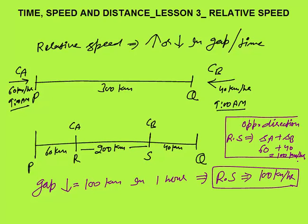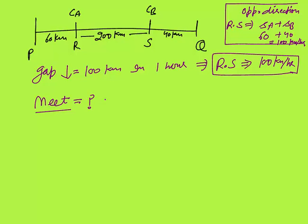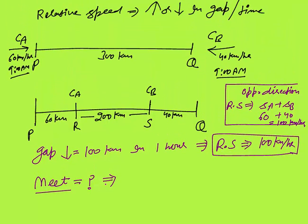My second question with respect to this example is: when will these two cars meet? You can see that the gap is 300 km. We need to reduce this gap of 300 km. We need to calculate time. Time is distance divided by speed. In relative speed questions, I will take distance as the gap. We need to reduce the gap of 300 km. When the cars meet, the gap will become 0.